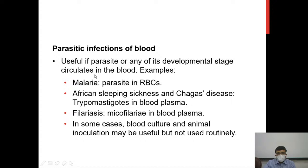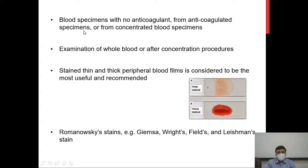For blood parasites, it is useful when the parasite or any developmental stage circulates in blood. Examples include malaria where the parasite is seen in RBCs; African sleeping sickness and Chagas disease where trypomastigotes are seen in blood plasma; and lymphatic filariasis where microfilariae may be seen circulating in blood plasma. Blood specimens may be sent without anticoagulant in some cases, but for malaria EDTA is required.